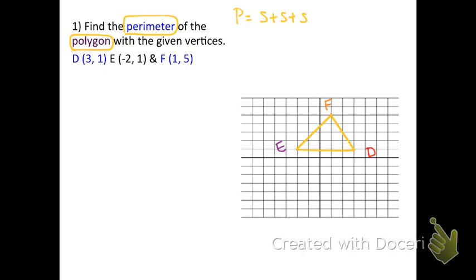We start with the easiest side, DE, which is a flat horizontal line. The measurement of DE is 5 units, so we write DE = 5 units.